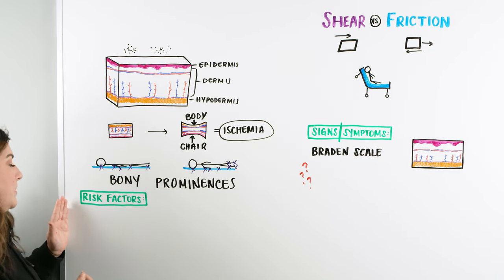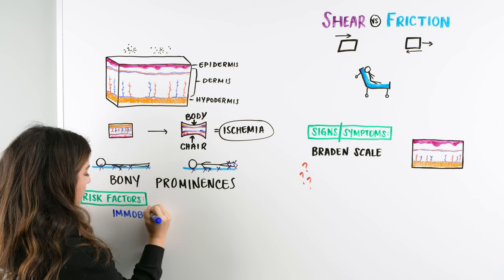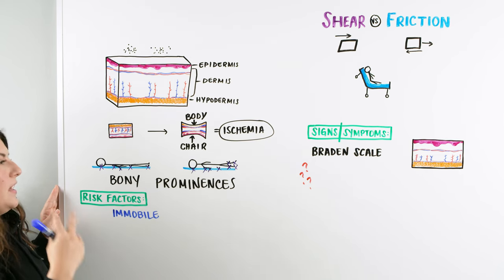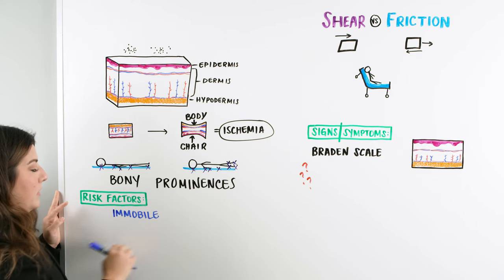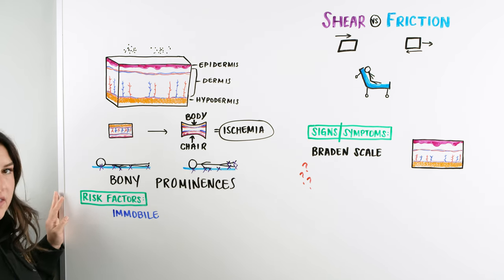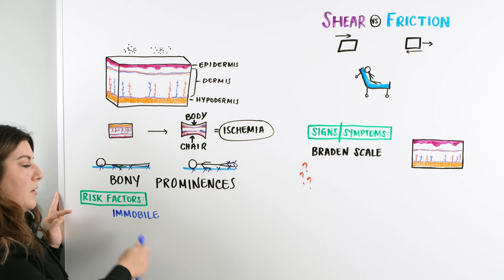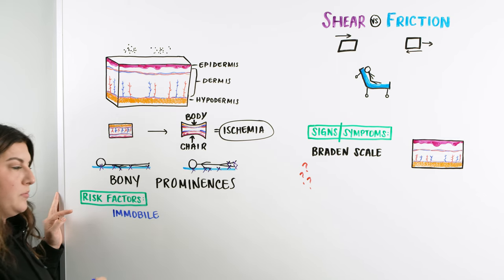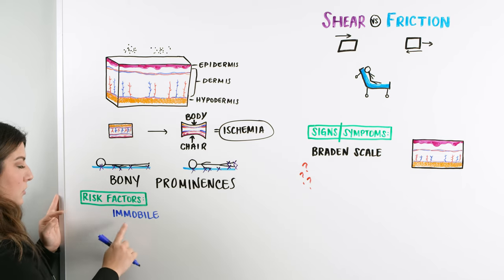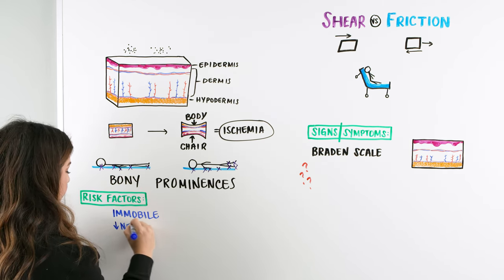What are the risk factors for a patient to potentially develop a pressure injury? One is immobility. If a patient isn't moving, they cannot relieve the pressure, and that constant compression on the skin leads to ischemia and breakdown. Immobility covers a wide range — from someone who just doesn't want to get up, to someone who can't move freely, to patients on pain medication sleeping more deeply than normal, or sedated patients with a tube in place who aren't repositioning themselves.